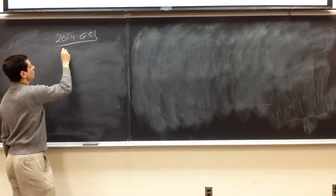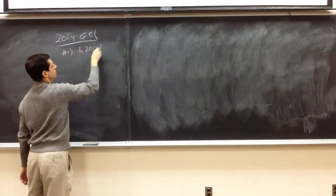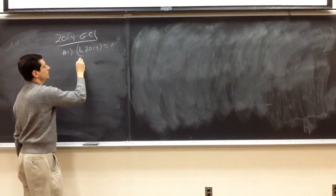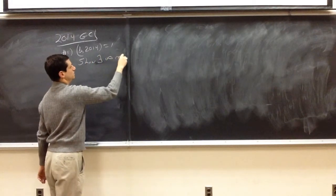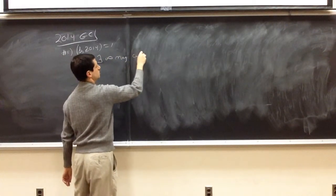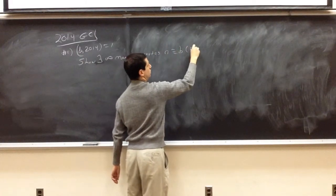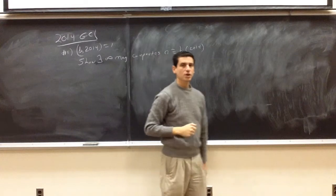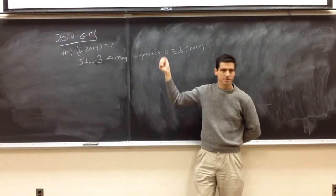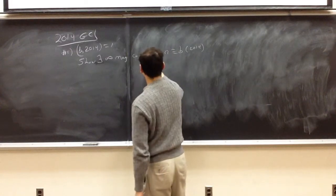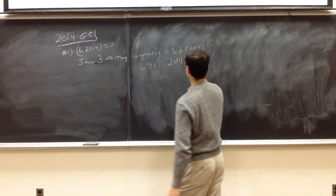Number one: we have B and 2014 to the prime, show there exist infinitely many composites. And kind of going to be more 2014. So there's lots of ways to do this. If B is not 1, it's very easy. If B is greater than 1, look at 2014 KB plus B.